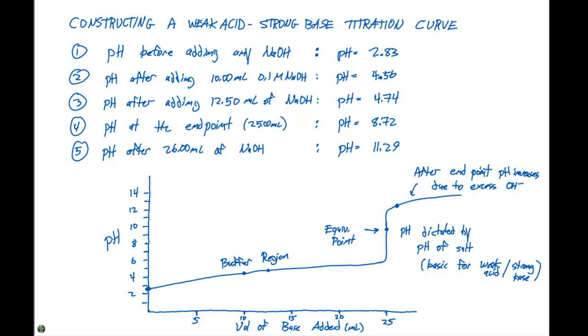One of the main differences here in comparison to a strong acid, strong base titration curve: this change in pH near the equivalence point, this steep line here, is going to be much smaller. The change in pH here is going to be much smaller than our strong acid, strong base titration.